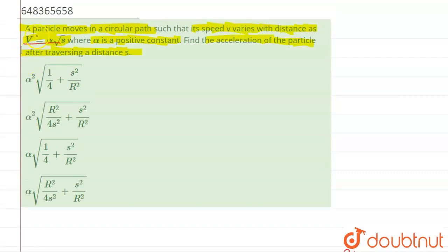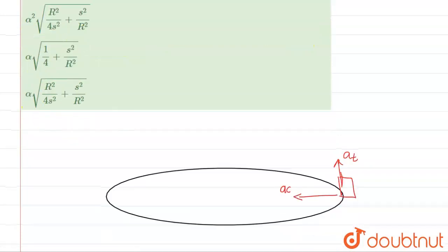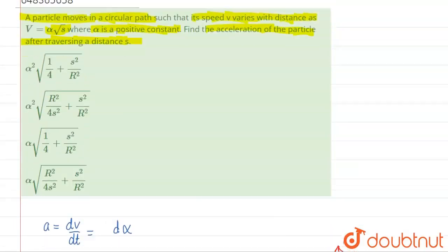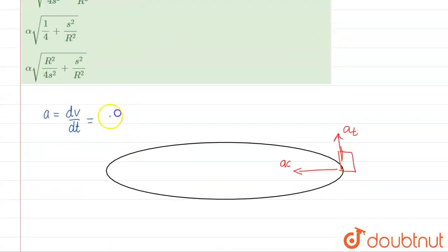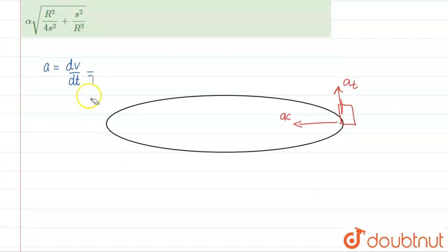Now what we have to do is find the acceleration. If we write down acceleration, it's basically dv upon dt. This equals d times alpha root s. It's given in terms of s, so we'll find it in terms of s. So a equals v times dv upon ds. This is the formula for finding it.